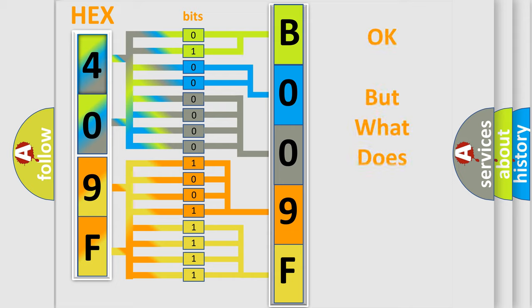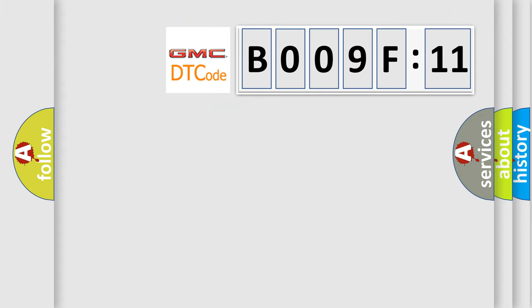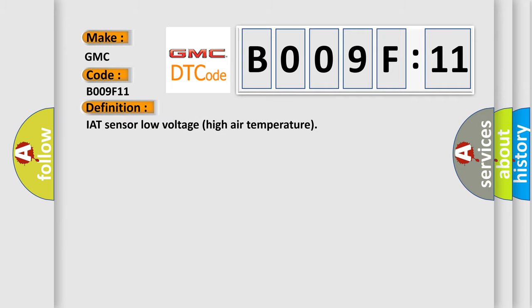The number itself does not make sense to us if we cannot assign information about what it actually expresses. So, what does the diagnostic trouble code B009F11 interpret specifically for GMC car manufacturers? The basic definition is: IAT sensor low voltage — high air temperature.